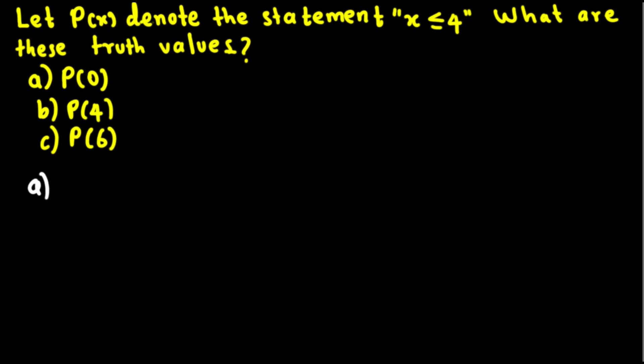Hey, what's going on guys? Let's look at this problem right here. This question is asking: Let P(x) denote the statement x is less than or equal to 4. What are these truth values? First, they're asking us to find out P(0). Second is P(4). Third is P(6).